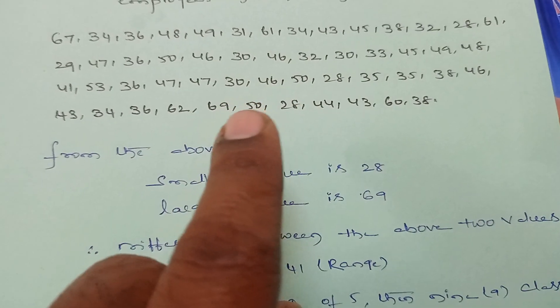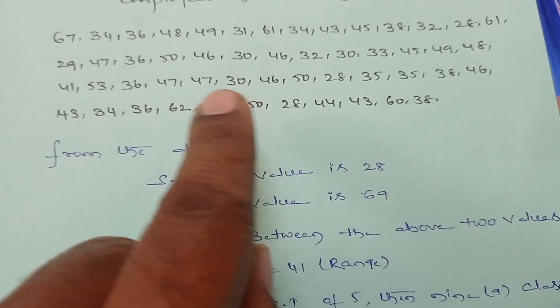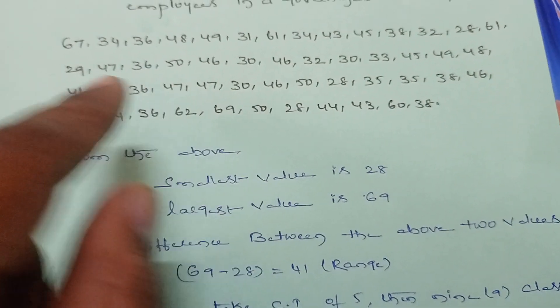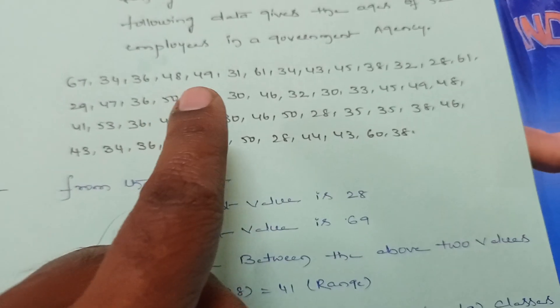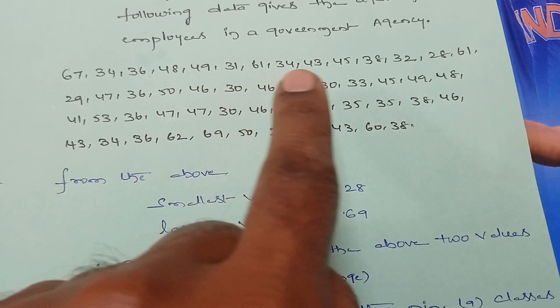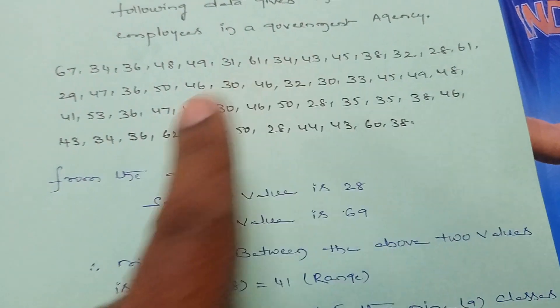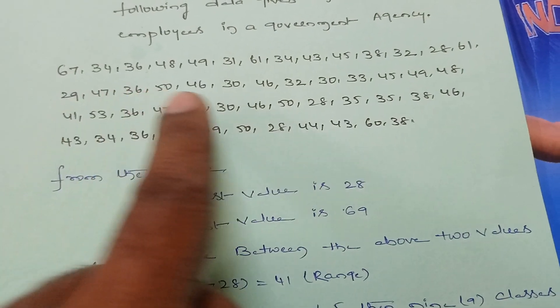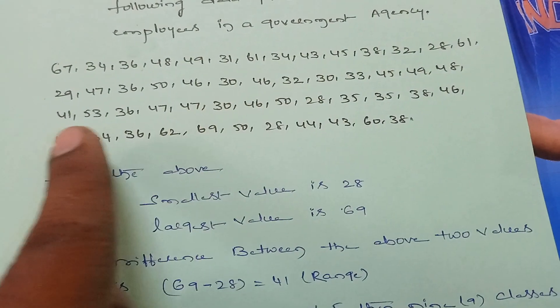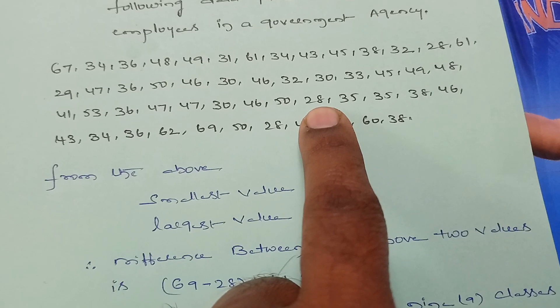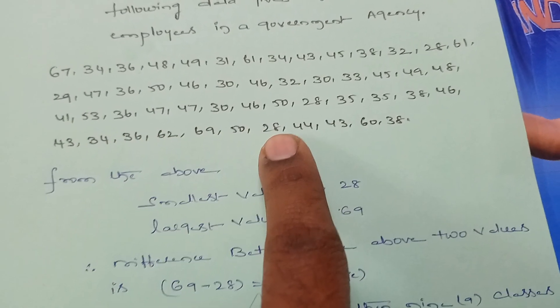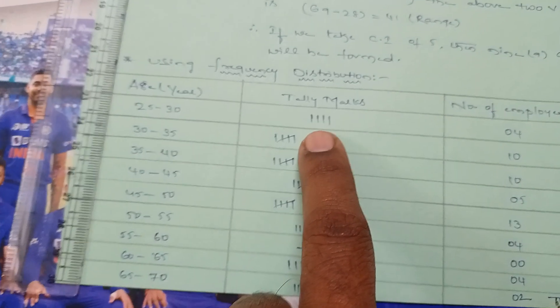25 to 30 means you don't include 30, so in this class interval we take up to 29. We get 28 as the first observation, 29 as the second, then 28 again for the third and fourth observations. That's 4 total.